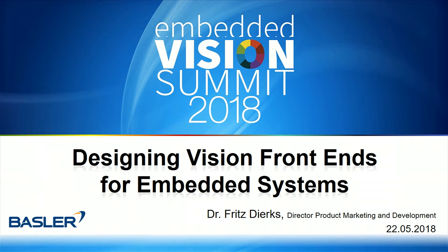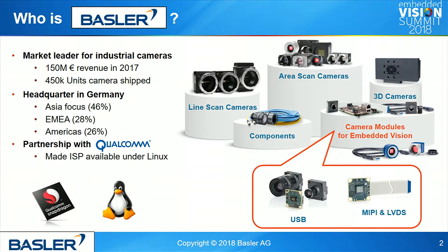Before I do that, I'll briefly introduce Basler. We are the market leader for industrial cameras with around 150 million euro revenue last year and a heavy focus in Asia. We have quite a lot of camera models — from area scan to 3D, line scan, and more. We also started some years ago to go into the embedded camera market, serving USB, LVDS, and MIPI. What's special with our MIPI cameras is we teamed up with Qualcomm and made their ISP available on Linux for our systems.